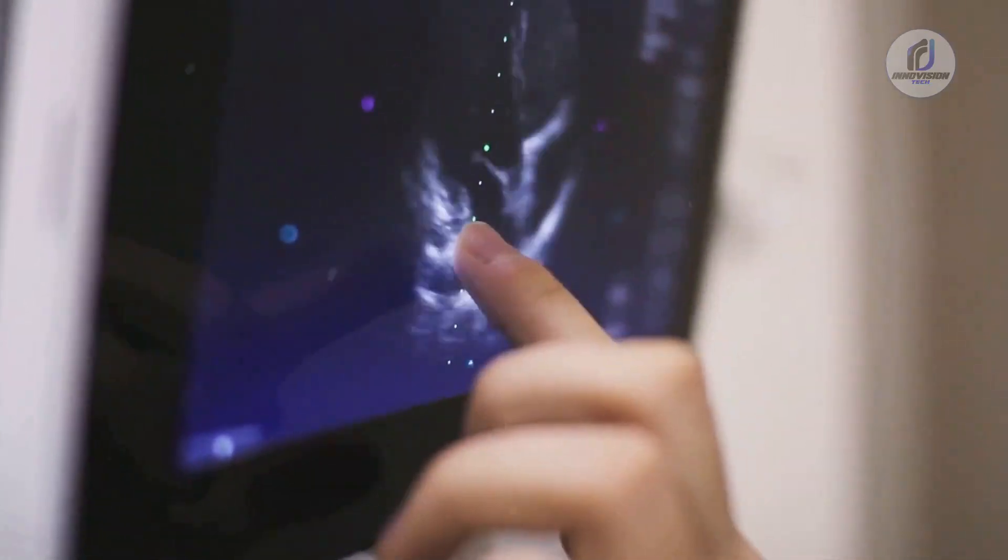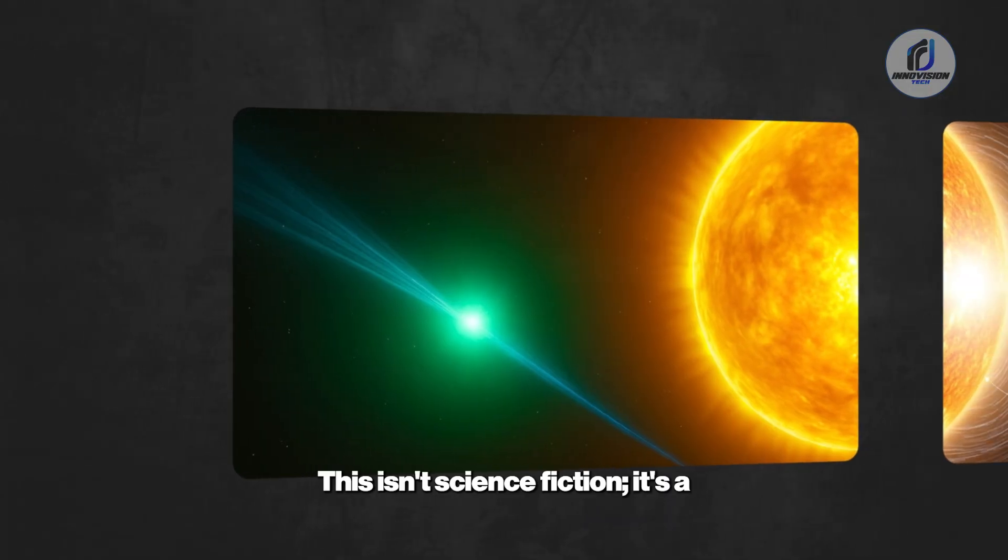What if a comet entered our solar system and broke every rule we thought we knew? Imagine an object that defies the fundamental laws of physics, sporting a feature that looks less like nature and more like engineering. This isn't science fiction. It's a thought experiment grounded in a torrent of strange data from real interstellar visitors. We're about to explore a hypothetical scenario based on real science that pushes the boundaries of understanding.